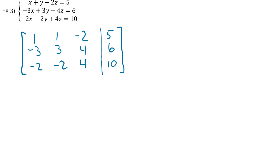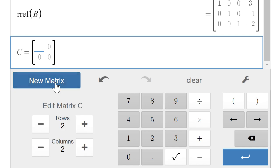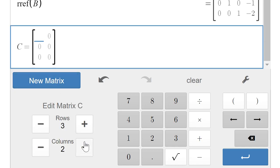And if we go back to the calculator, again we hit new matrix. It was again 3 by 4. And we go ahead and type it in. So 1, 1, negative 2, 5. Negative 3, 3, 4, 6. Negative 2, negative 2, 4, 10. I'm going to hit enter.